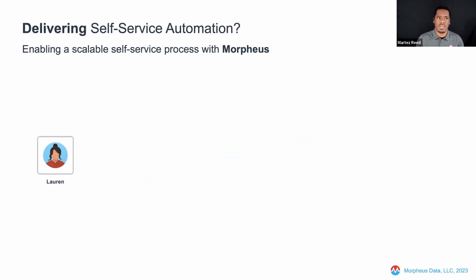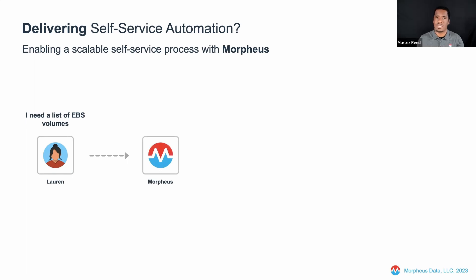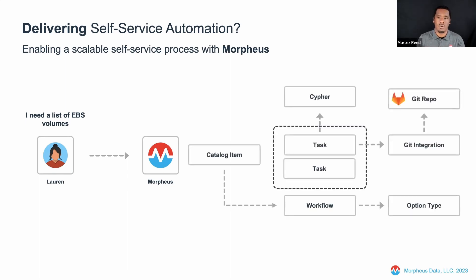Delivering this with the Morpheus platform — in this case, Lauren needs a list of EBS volumes. She's going to go to Morpheus. Morpheus has a self-service catalog where catalog items can be presented to an end consumer. We're going to walk through the various objects in the Morpheus platform used to compose a self-service automation catalog item. At a high level, we want our automation to be stored in source control, and then we build out automation around it — a catalog item backed by a workflow composed of tasks.